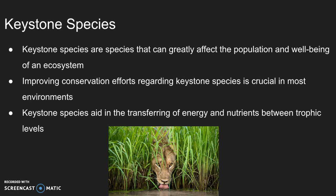Keystone species are fundamental components of ecosystems as they help to maintain and balance their surrounding environment. To support most ecosystems, it is crucial for conservation efforts to be redirected with a greater focus towards protecting keystone species. Keystone species can directly affect and alter the population levels of other species as they aid in the transferring of energy and nutrients between trophic levels.